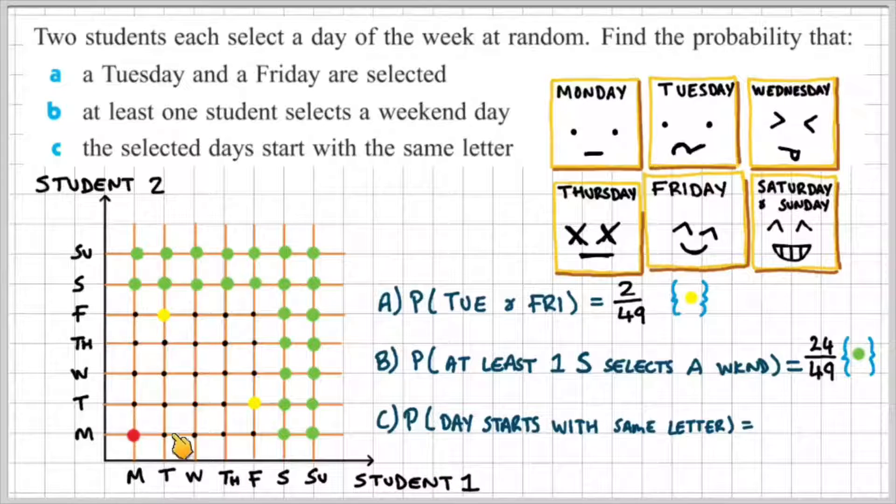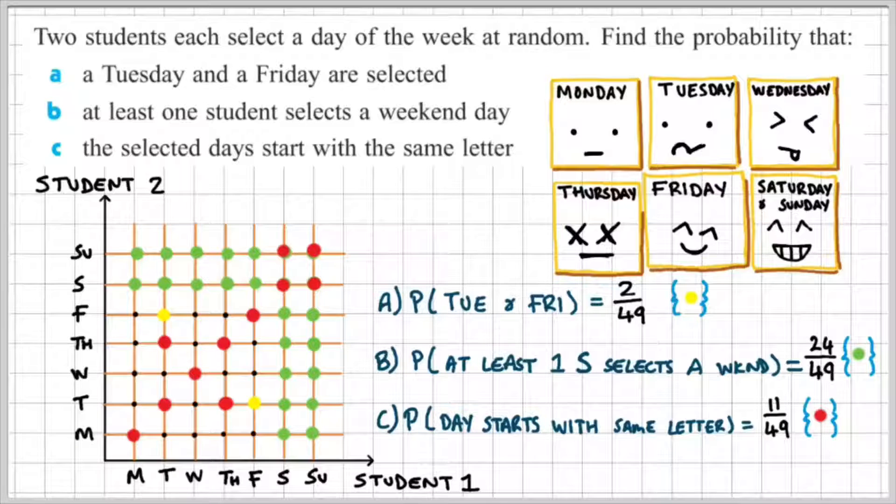Student 1 selects a Tuesday and Student 2 selects a Tuesday, and so on, as long as the students select a day that starts with the same letter. So there are 11 out of 49 options available, which is indicated by my red dot on my grid.